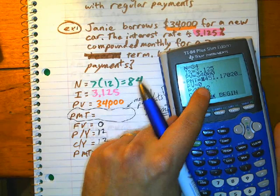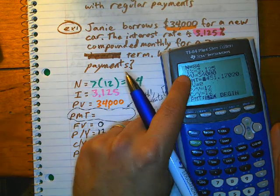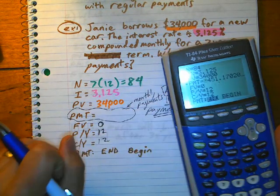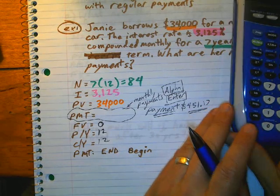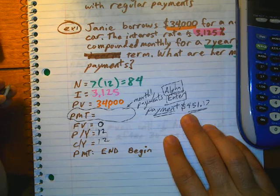and now my payment is $451.17. Notice it's got a negative there. That means because you're paying money in order to get this much money. So, there we go. Let's do another one.